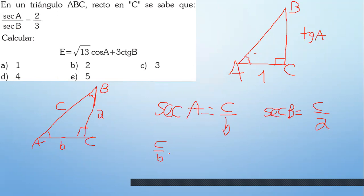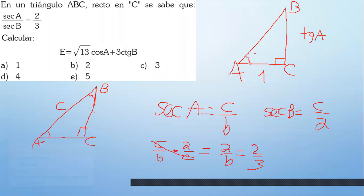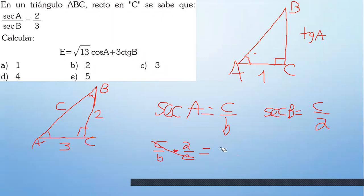C sobre B dividido con C sobre A. Cancelaría y te quedaría A sobre B. A sobre B te están diciendo que es dos tercios. Entonces, ¿qué podrías hacer? A ponle 2 y B ponle 3. Él ha simplificado ya las cosas.